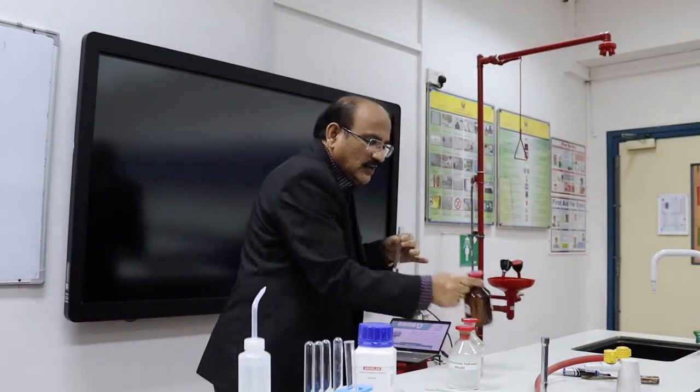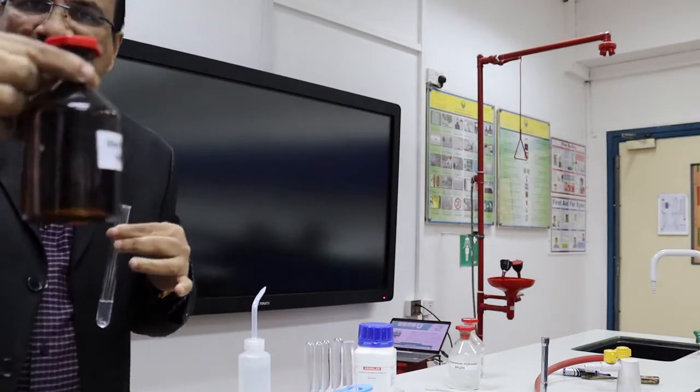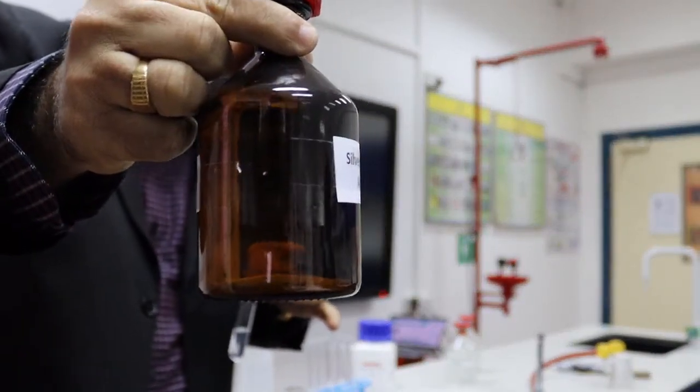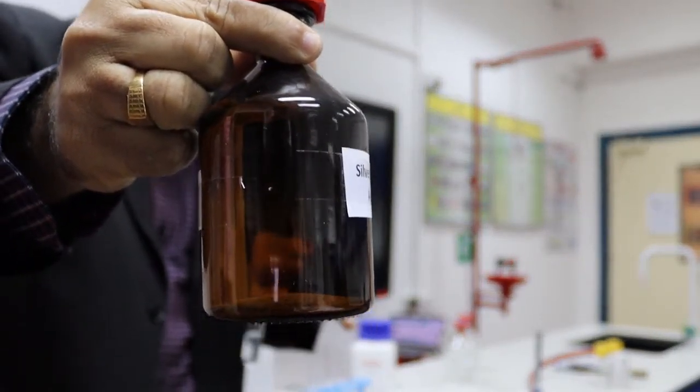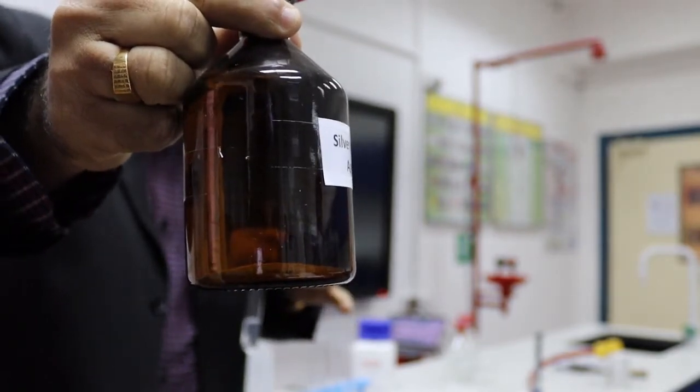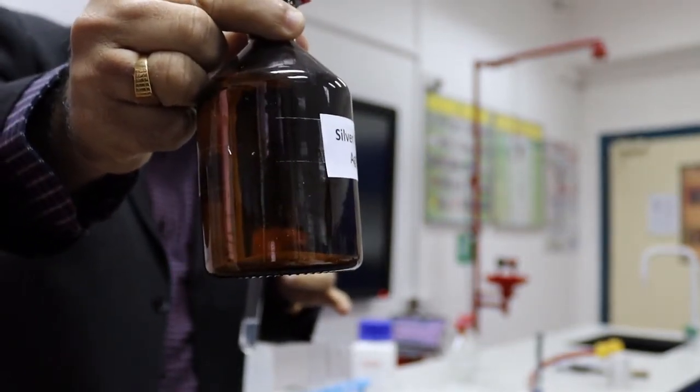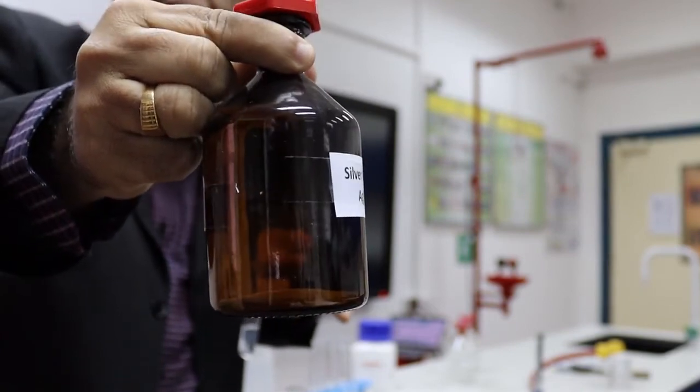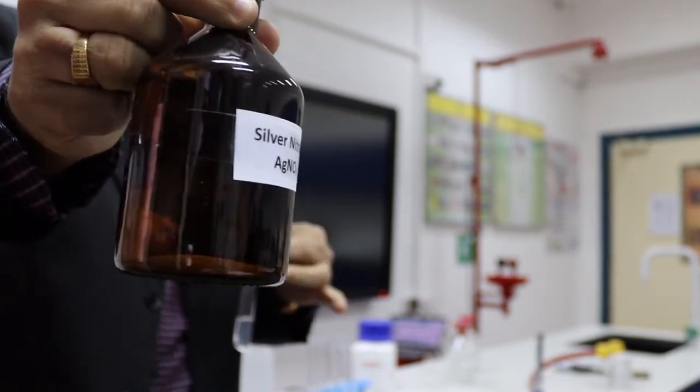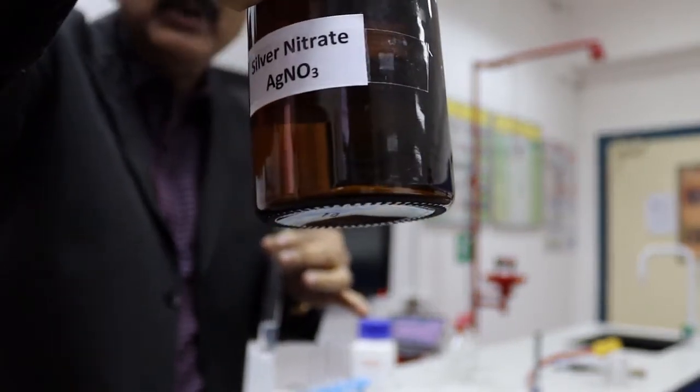So now we will take silver nitrate. You can see silver nitrate bottle. It is called an amber colored bottle, because it will undergo photochemical reaction. To prevent the energy of light, always silver nitrate will be kept in amber colored bottles.